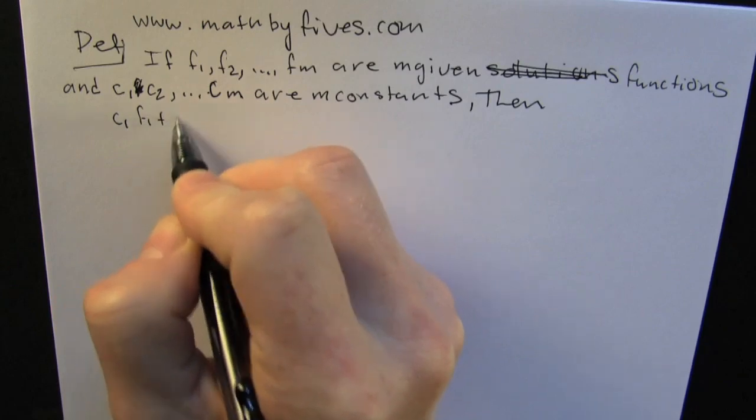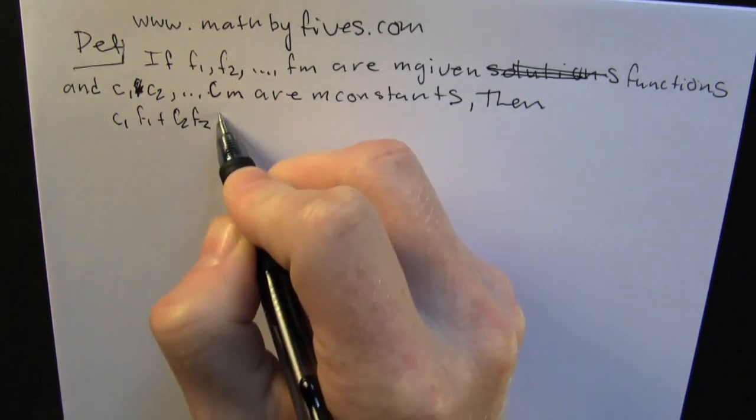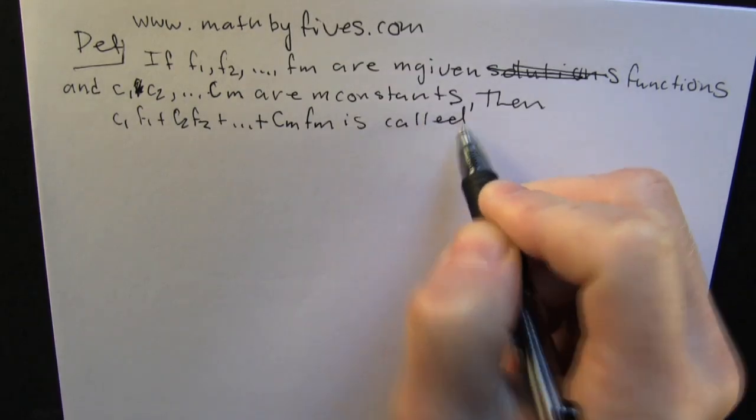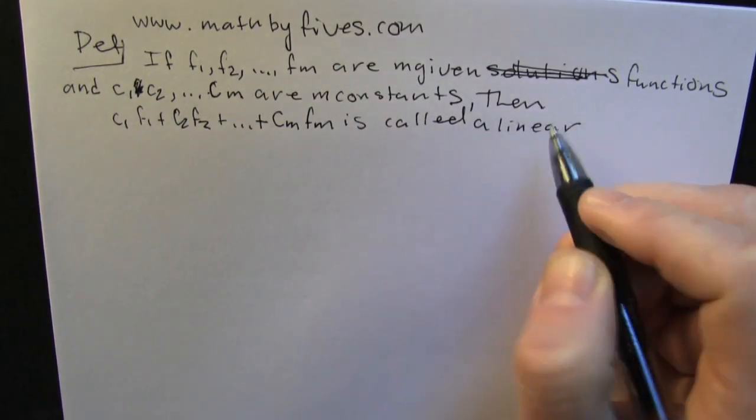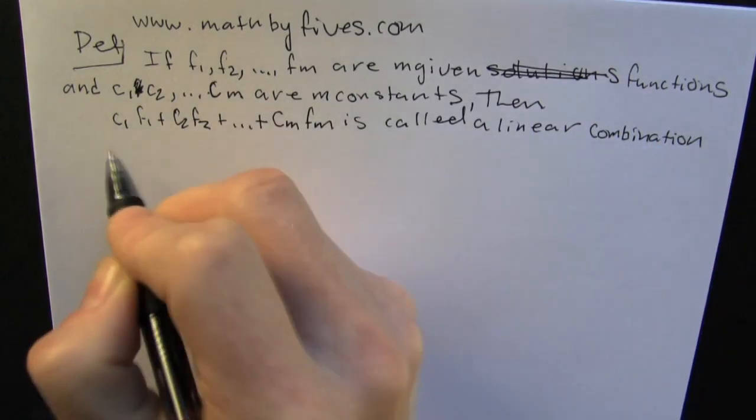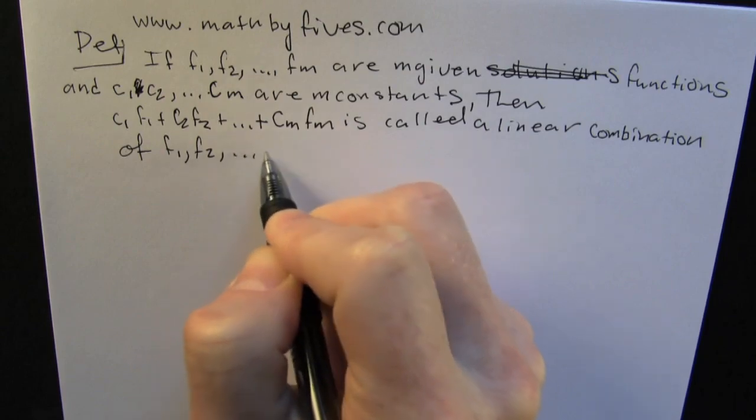Then c1 times f1 plus c2 times f2 plus dot dot dot cm times fm is called a linear combination of the functions.